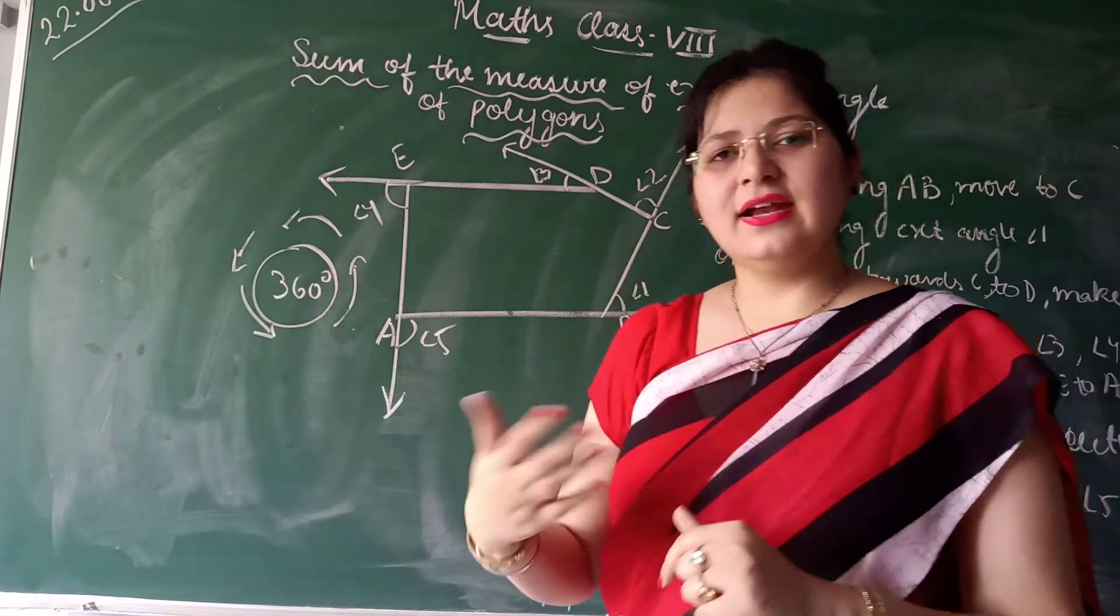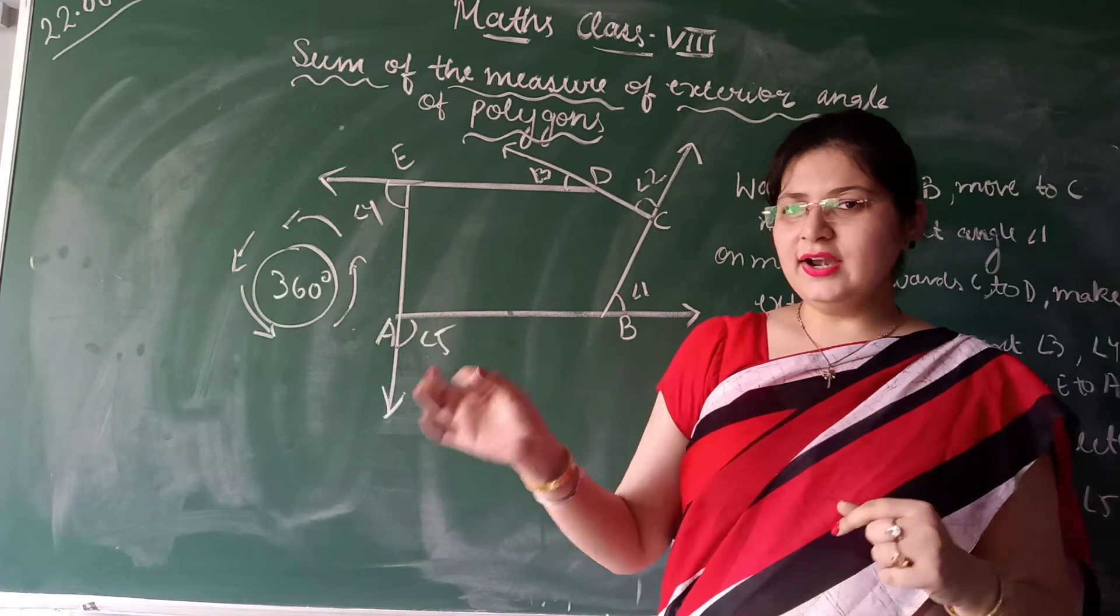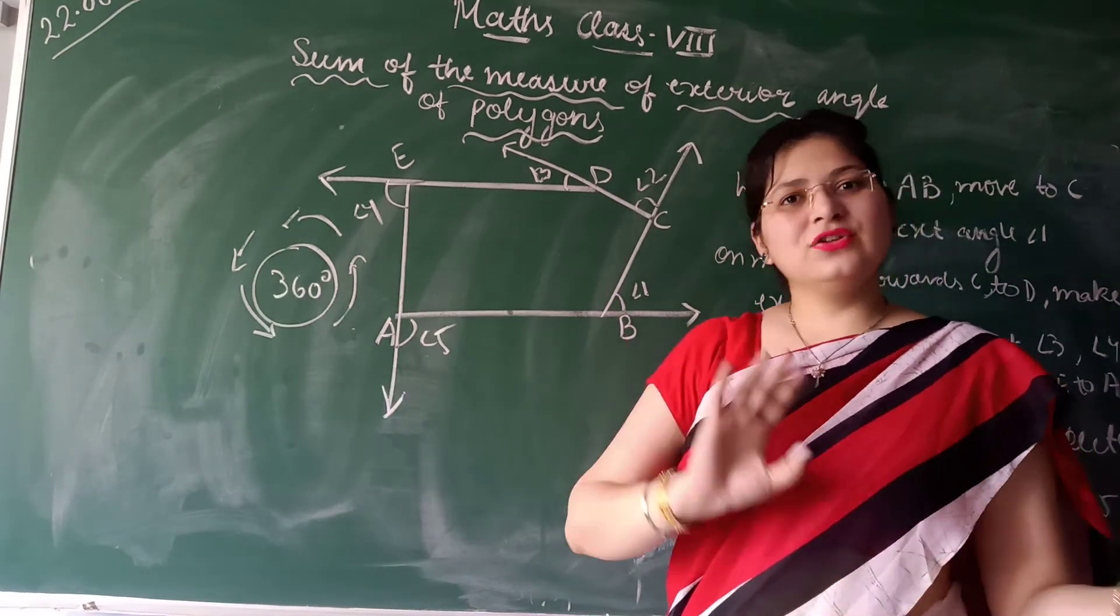Similarly for 6 sides, 7 sides, 8 sides. To find the measure of the interior angle is different. But for exterior angle, it is 360 degrees.